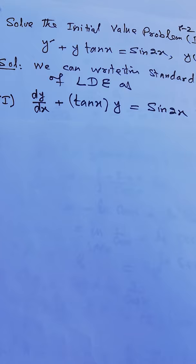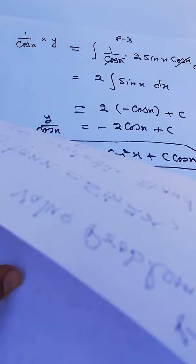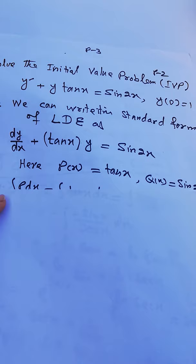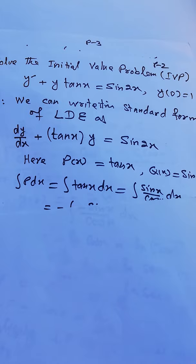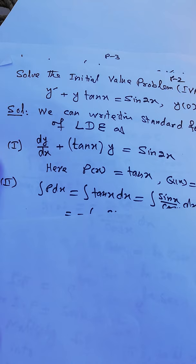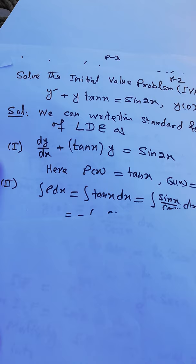The given equation is dy/dx plus tangent x times y is equal to sine 2x. This is of the form dy/dx plus P·y equals Q, where P is tangent x and Q is sine 2x.